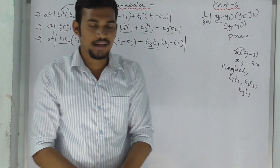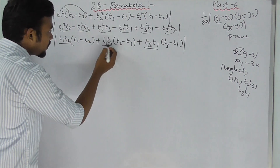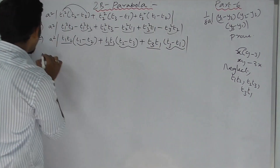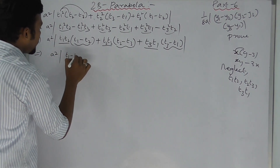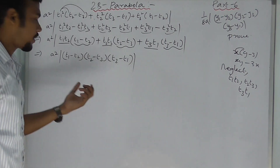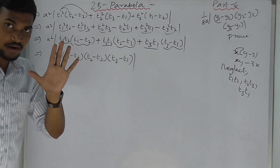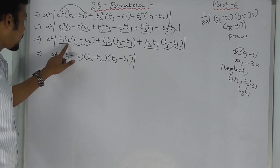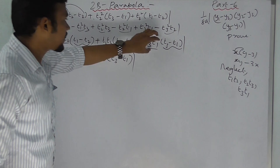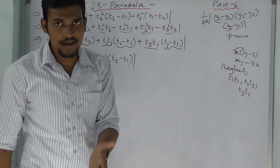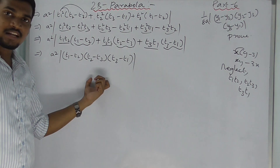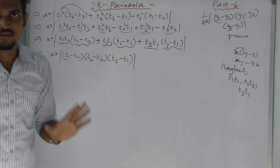So the expression simplifies. We observe the factored form: a²(t1 − t2)(t2 − t3)(t3 − t1). Combined with the ½ and 2a factor outside, the area becomes: ½ · 2a · a² · |(t1−t2)(t2−t3)(t3−t1)|, which equals a² |(t1−t2)(t2−t3)(t3−t1)|.